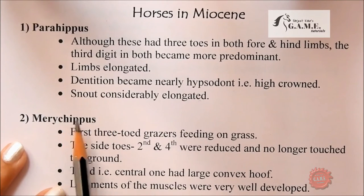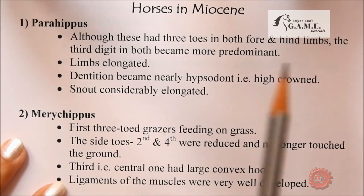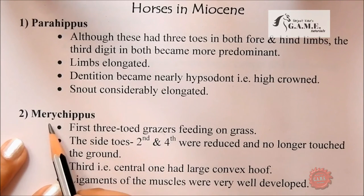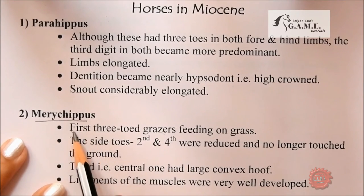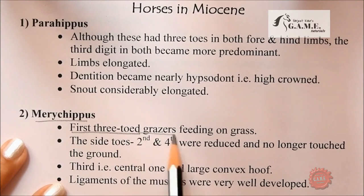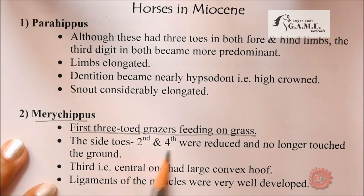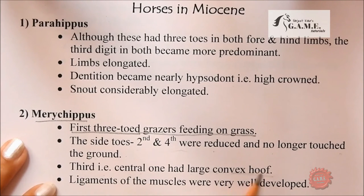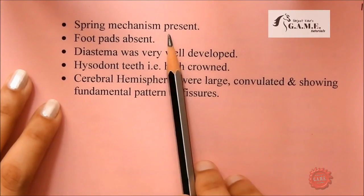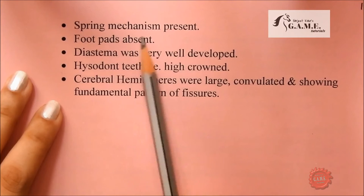Merychippus was the first three-toed grazer feeding on grass. Side toes — second and fourth — were reduced and no longer touched the ground. The third, central digit had a large convex hoof. Ligaments and muscles were very well developed in Merychippus, and a spring mechanism was present. Foot pads were absent.